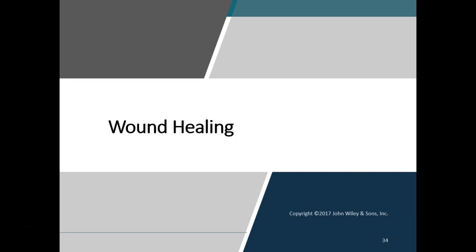When the skin has been damaged, a sequence of events has to occur to repair the skin and return its normal or almost normal structure and function. Two kinds of wound healing processes can occur depending on the depth of the injury. Epidermal wound healing occurs following wounds that affect only the epidermis. Deep wound healing occurs following wounds that penetrate the dermis.